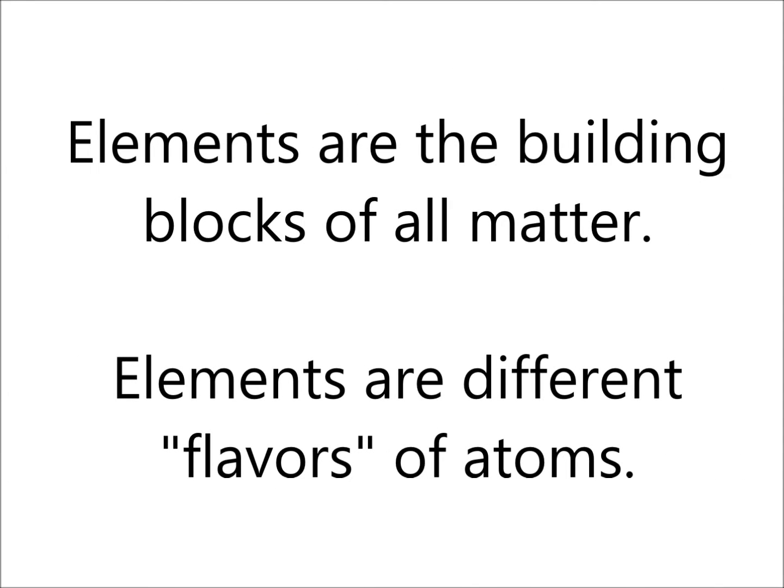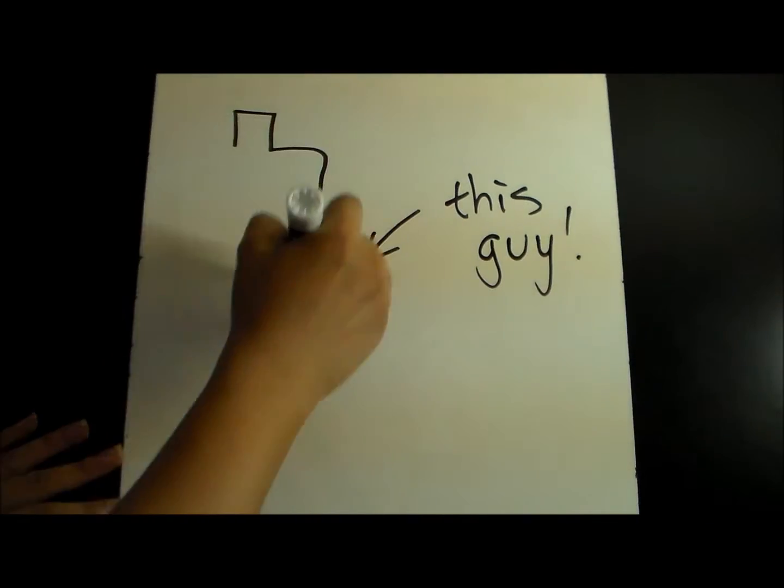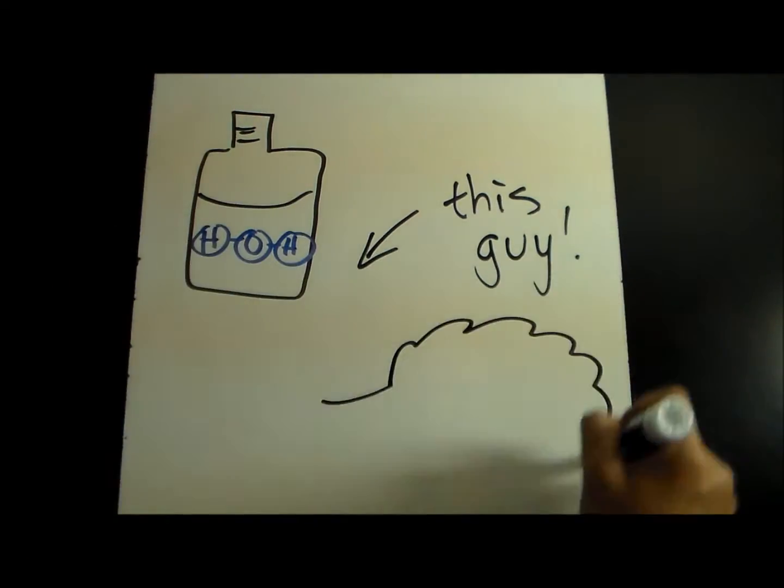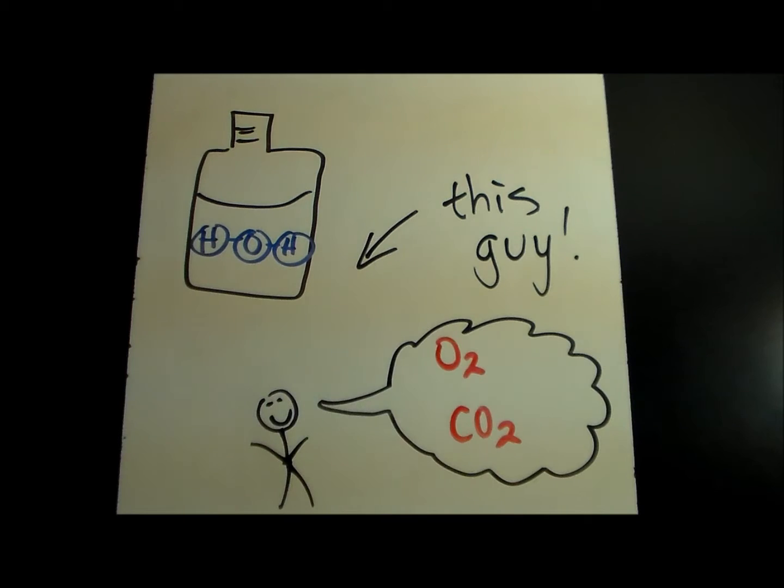Elements are the building blocks of all matter. Matter is anything composed of atoms, so elements are just different types of atoms. Matter includes this whiteboard, the water you drink, the air you breathe, even you yourself because all these things are made of atoms.